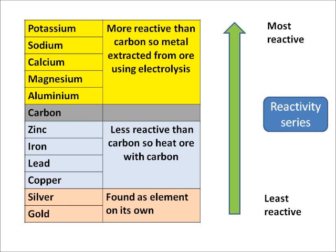What do we do? Well, if they're very, very reactive — if they're more reactive than carbon — there's only one way of extracting them from their ore. So if I've got aluminium oxide, the only way I can extract it from its ore is by using electrolysis.